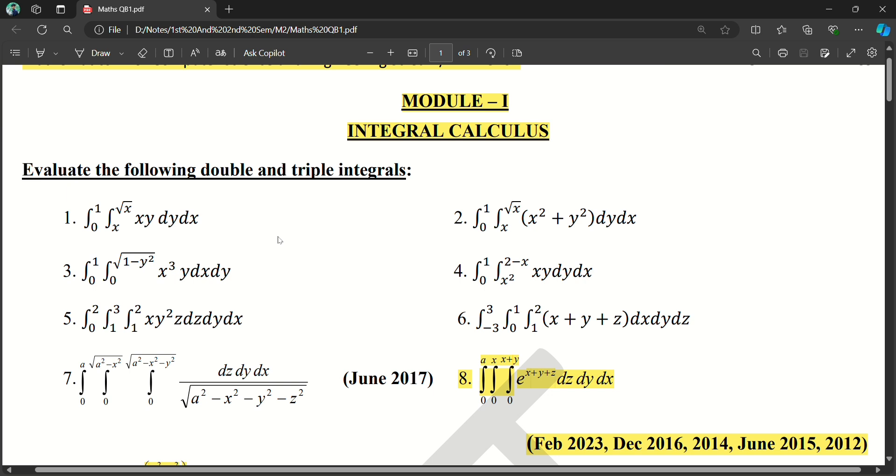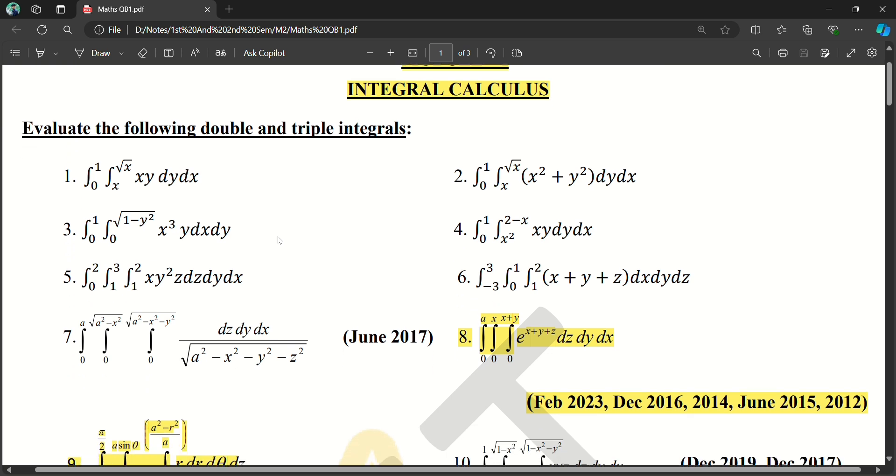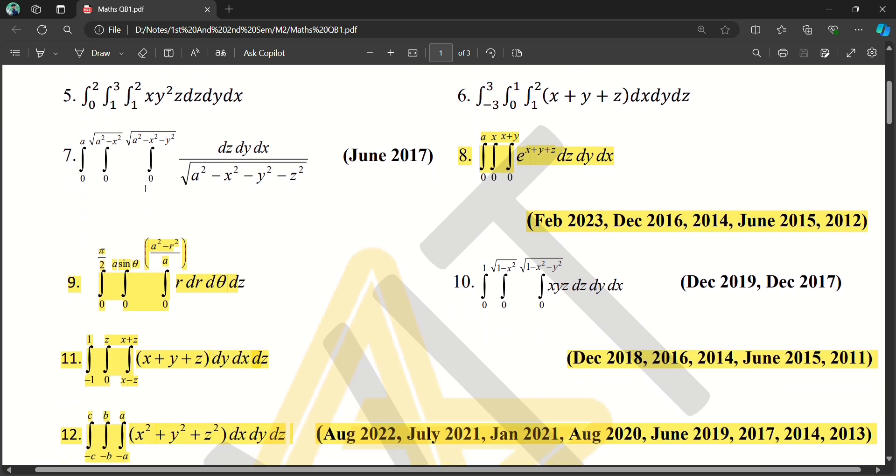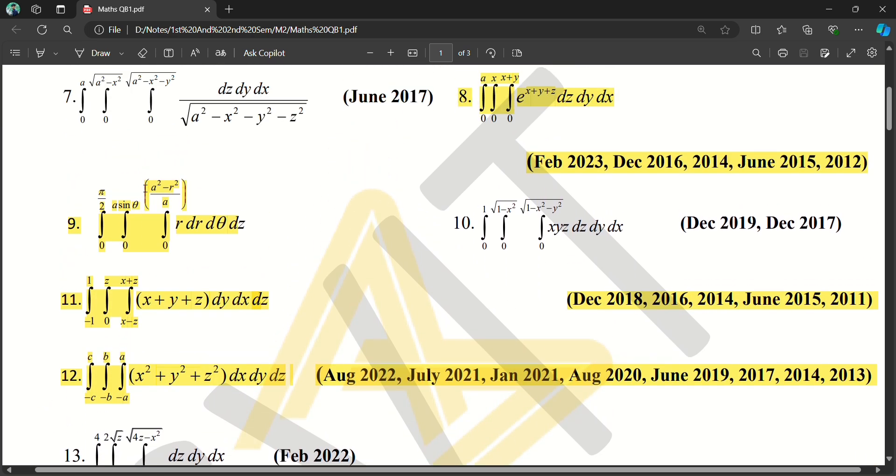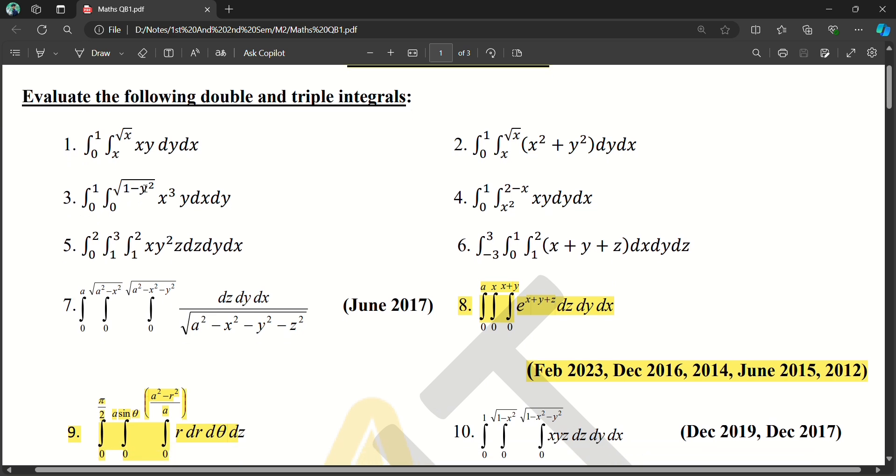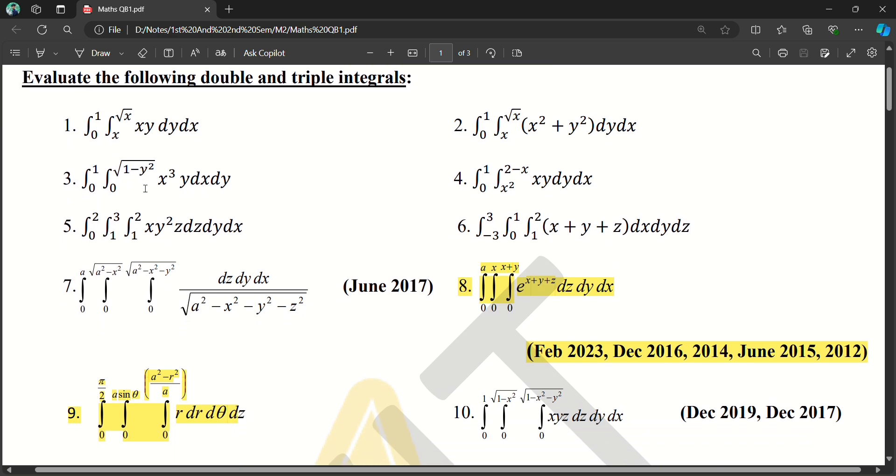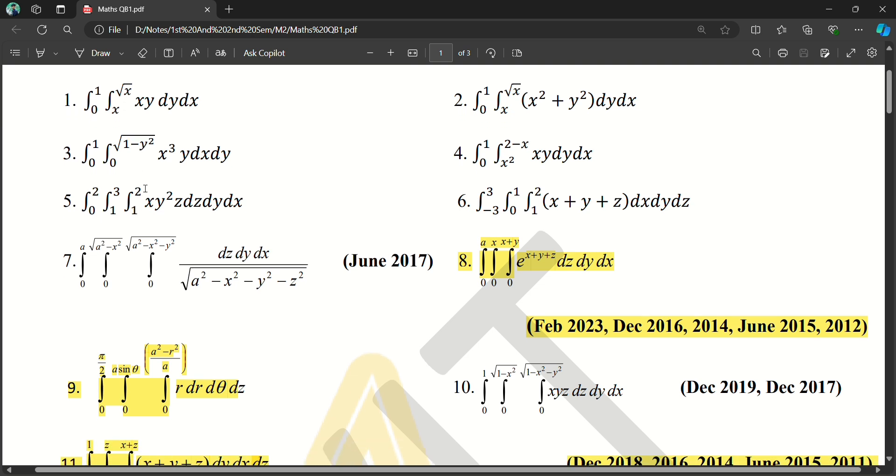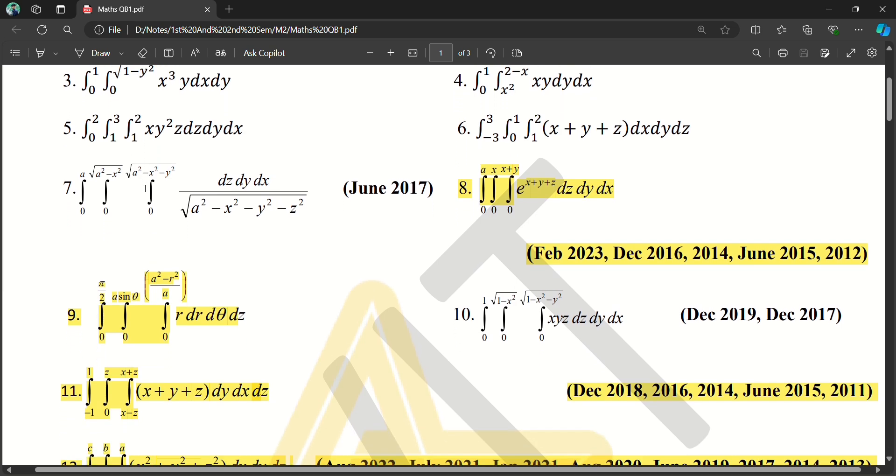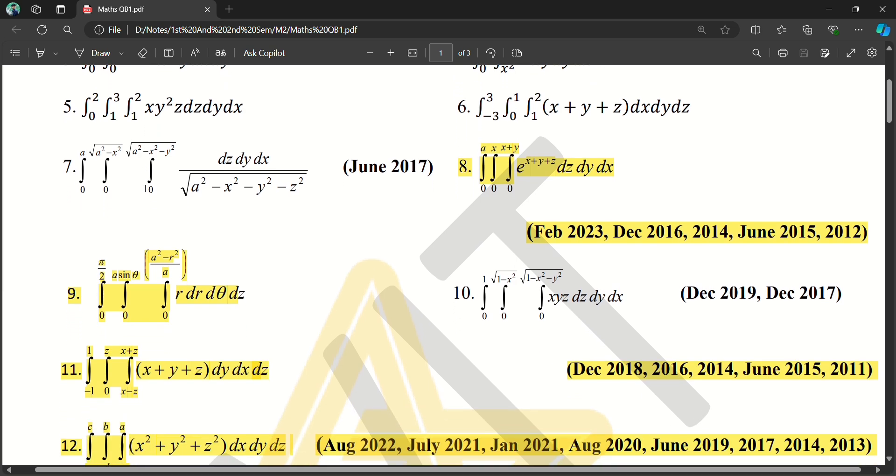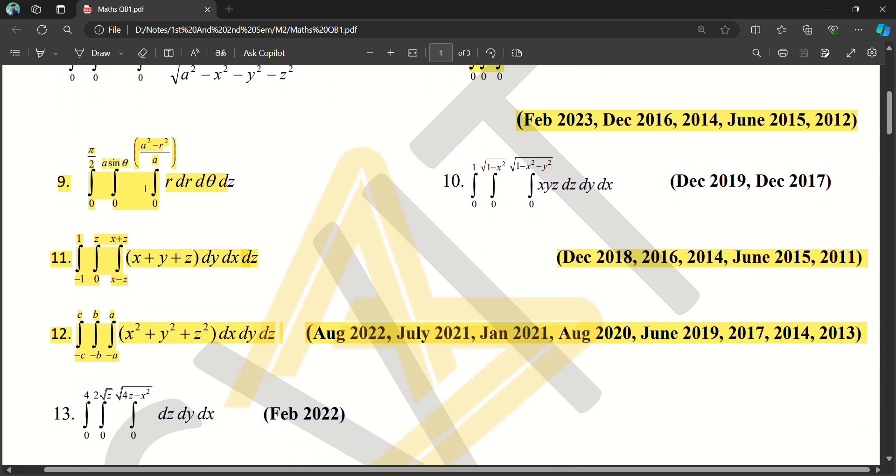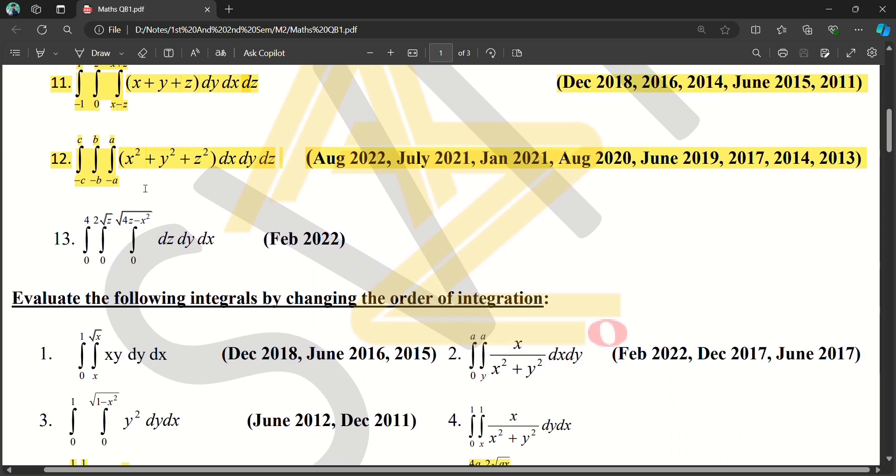Module 1 Integral Calculus. Evaluate the following double and triple integrals. From this 12 to 13 questions, we have to only do the highlighted questions perfectly and the remaining questions you can see once. Make sure that the highlighted questions should be done perfectly. These questions are the most asked and important questions from this module.